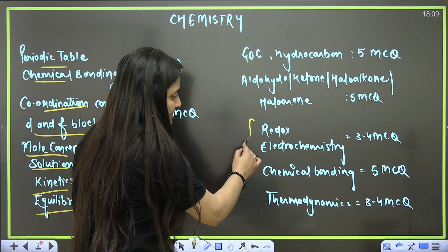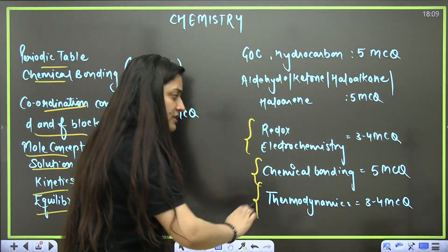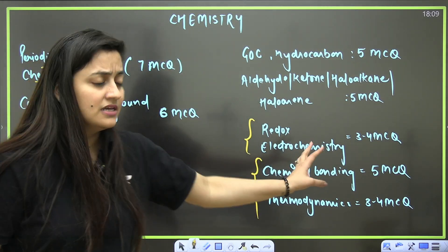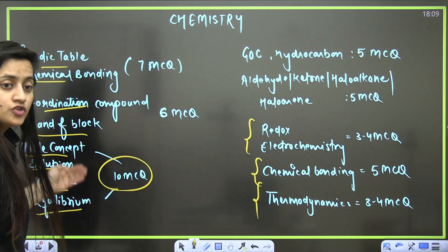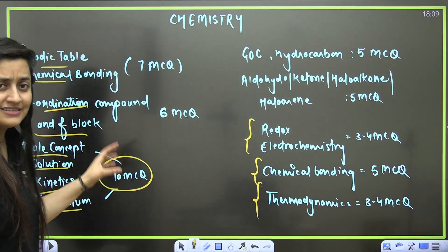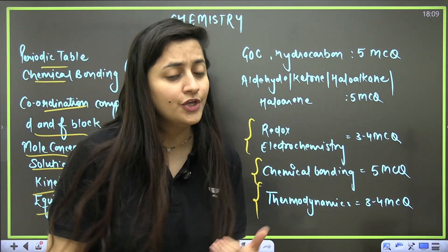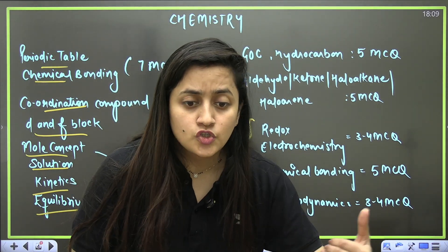Redox and electrochemistry—three to four questions. Chemical bonding—five questions. Thermodynamics here also, you can complete three to four MCQs. You can take a screenshot, note it down. If there is any chapter which you find difficult, you can replace it with another scoring chapter as well. It's totally up to you.